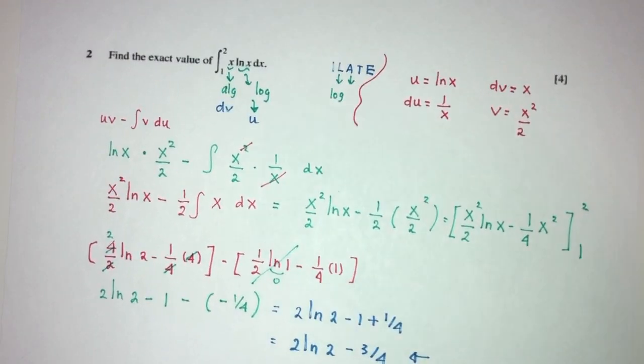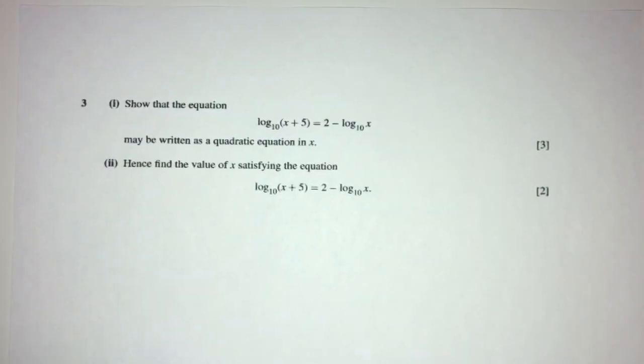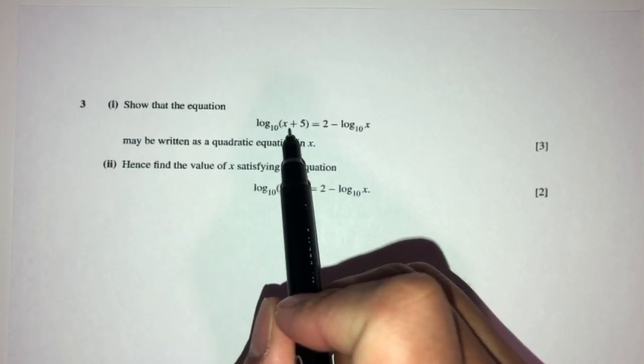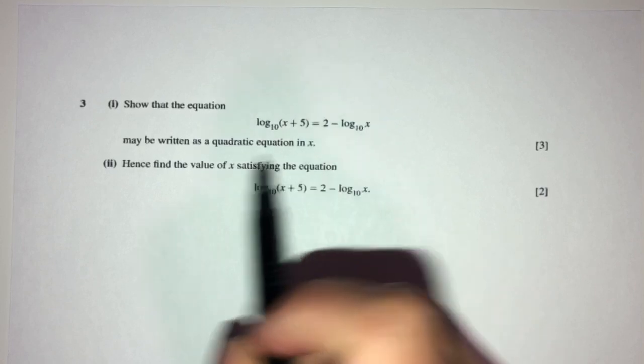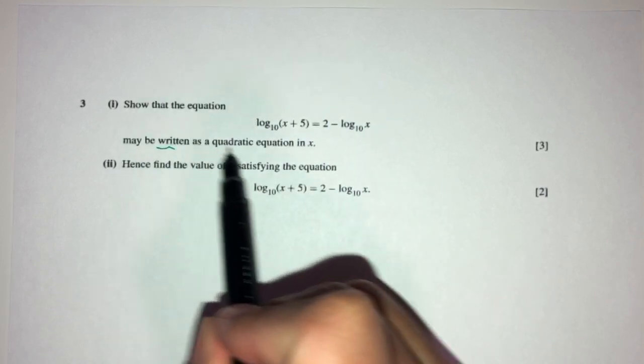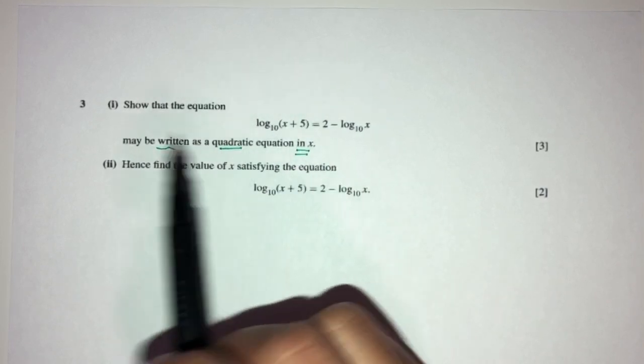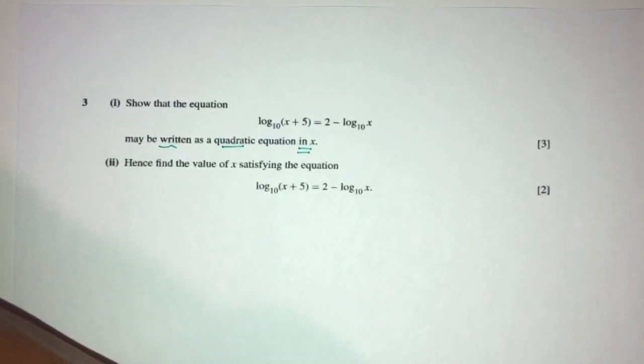That will be question number 2. Let's move on to question number 3. We have to show that the equation log base 10 of (x plus 5) equals 2 minus log base 10 of x can be written as a quadratic equation in terms of x. So we have to simplify this log function into a quadratic equation — that's what it's asking.